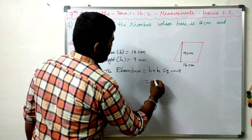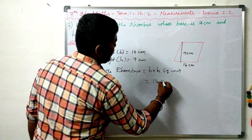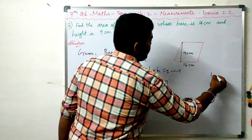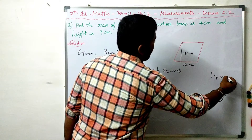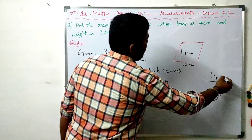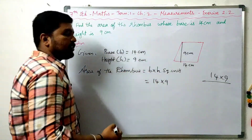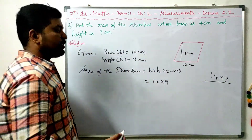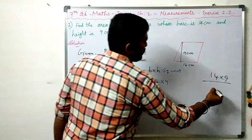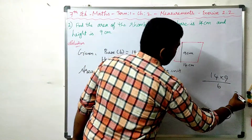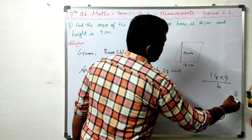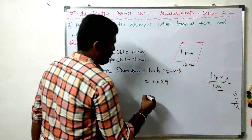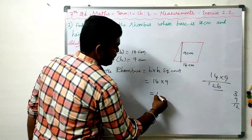Now we multiply: base 14 into 9. 14 multiplied by 9: 4 nines are 36, write 6 carry 3; 1 nine is 9, plus 3 is 12. So 14 into 9 = 126.